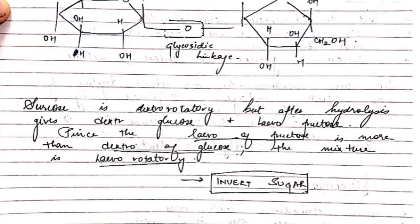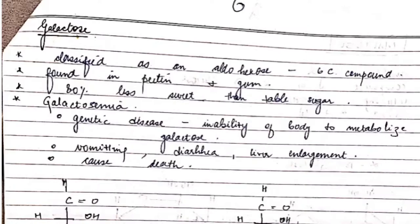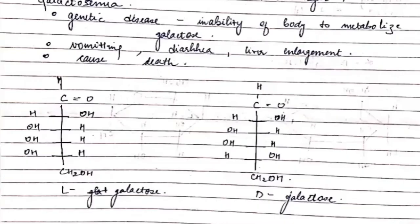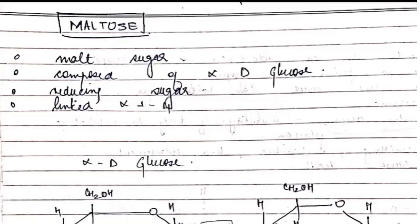Another example is galactose, classified as an aldohexose — a six-carbon compound. It is found in pectins and gum. It is associated with a genetic disease where the body is unable to metabolize galactose, causing vomiting, diarrhea, liver enlargement, and can also cause death. This disease is called galactosemia. The structures for L-galactose and D-galactose are shown in the diagrams.